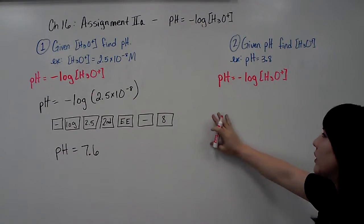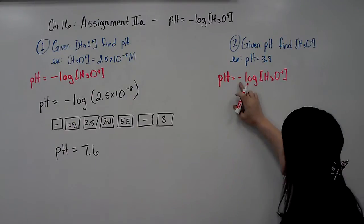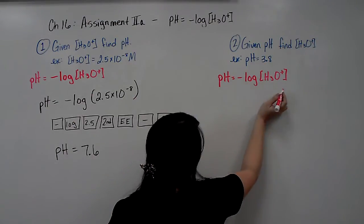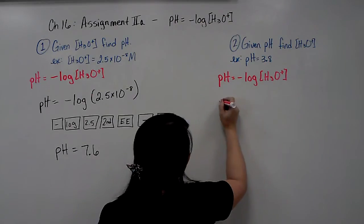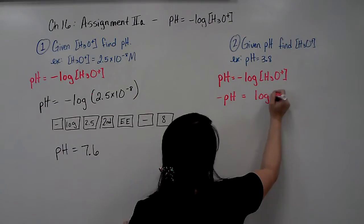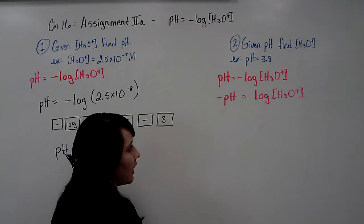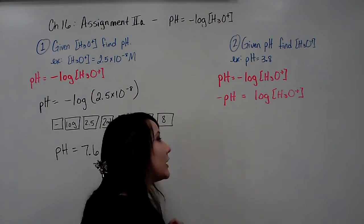So we're going to rearrange the equation. Because it's negative on this side, let's get rid of the negative. So we're going to multiply both sides by negative 1. So now we have negative pH equals log of hydronium. So I just basically moved my negative to the other side.